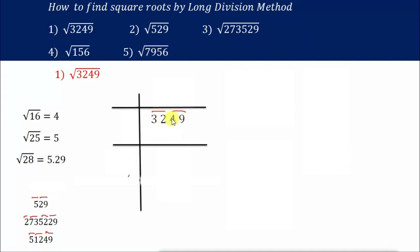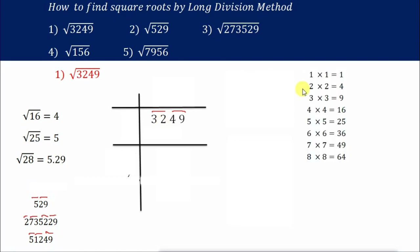Now we are dealing with two pairs. For 32, we have to search for the perfect square nearest to 32. Going through: 1×1=1, 2×2=4, and so on — 5×5=25 and 6×6=36. We cannot take 36 because it is greater than 32. So the number that works for us is 25, that is 5×5=25, which is less than 32 and nearest to 32.